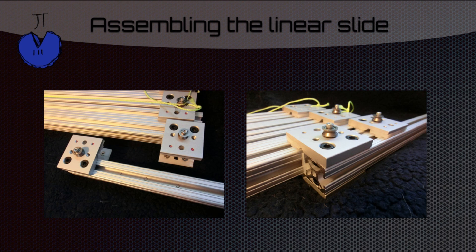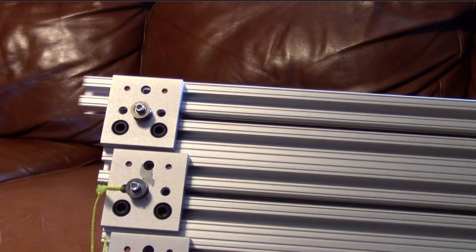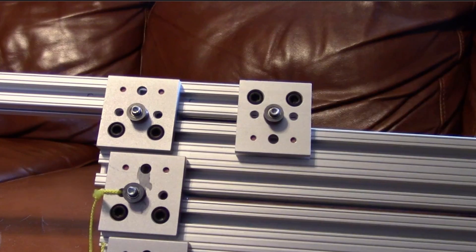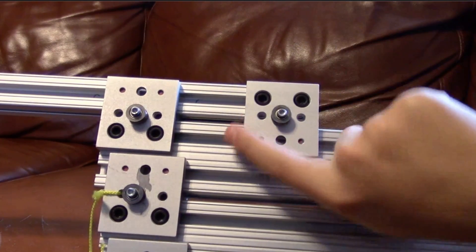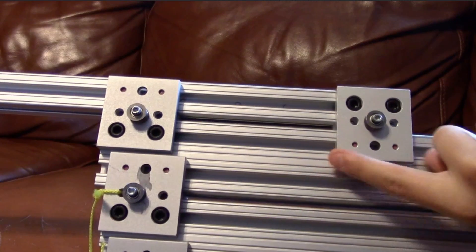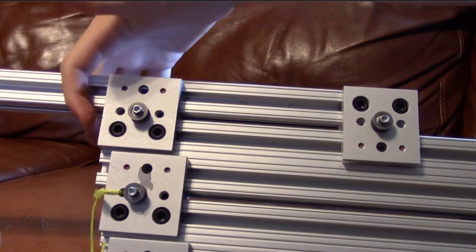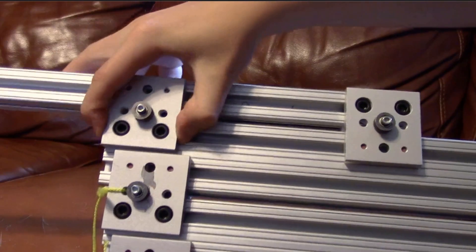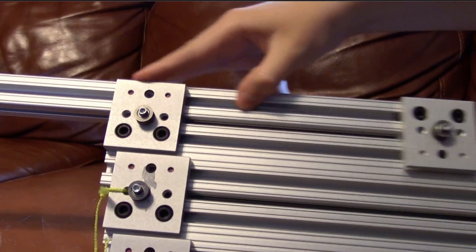Next, we'll show you how you assemble the linear slides. Right here is just a quick look at how they slide together. Here you can see how the linear slide works with the linear bearings. On the top you can see the connection points and how it slides freely on the bottom. On the other side, it's basically the same thing just flipped — slides freely on the top but it's connected on the bottom.